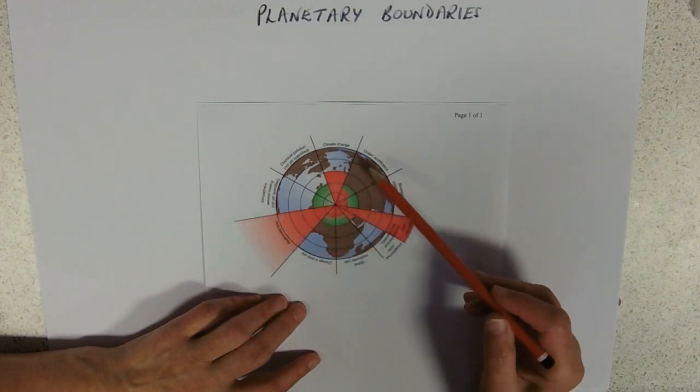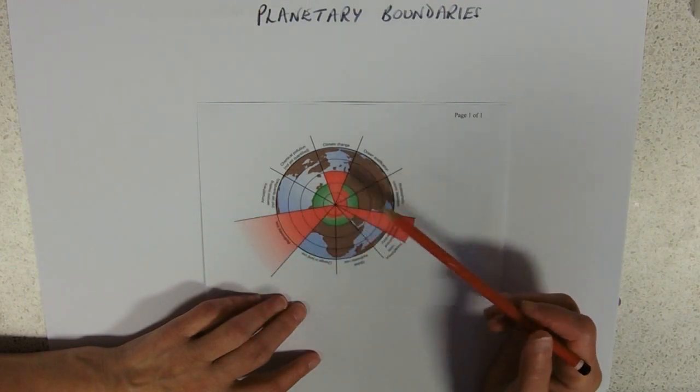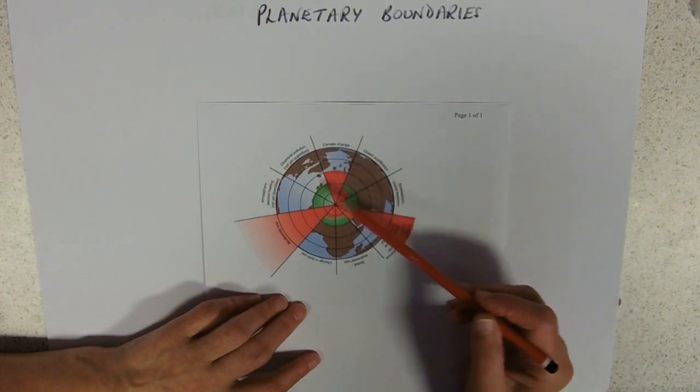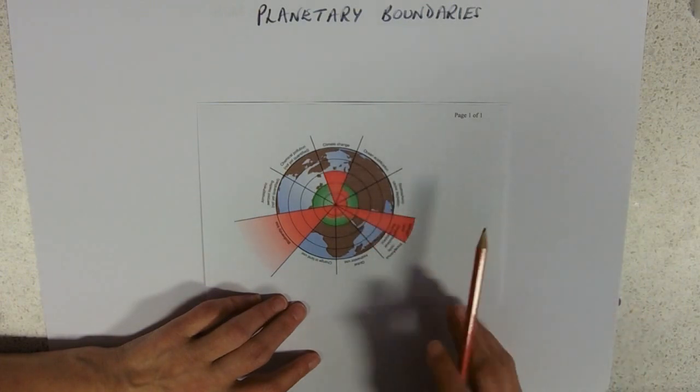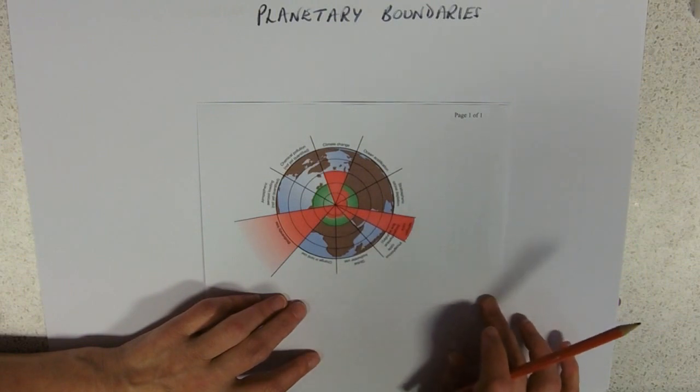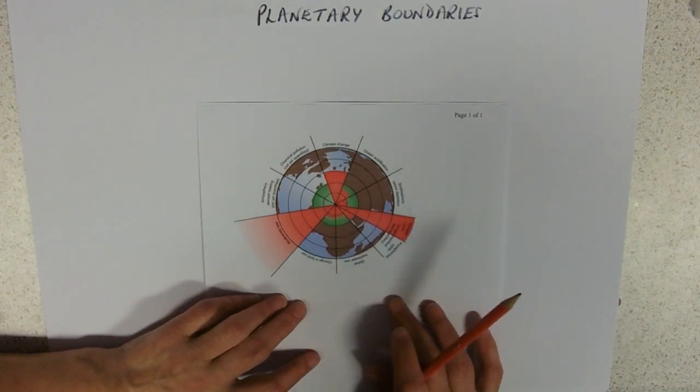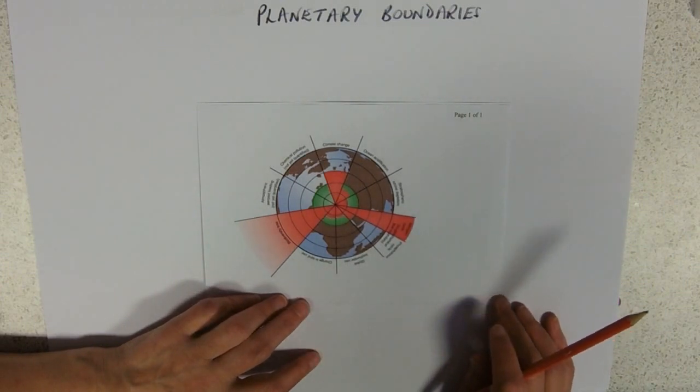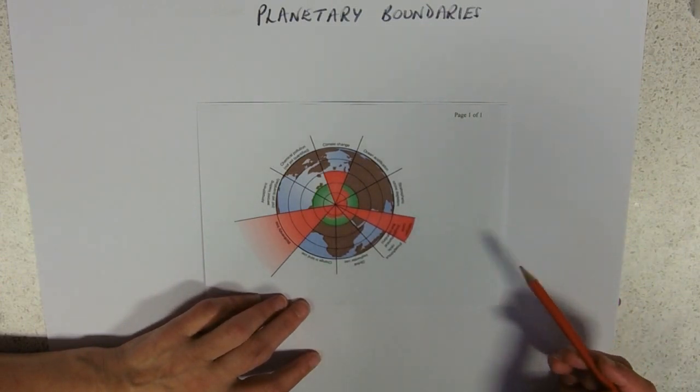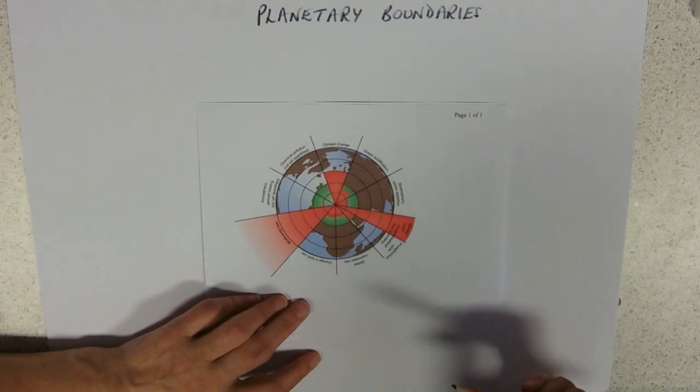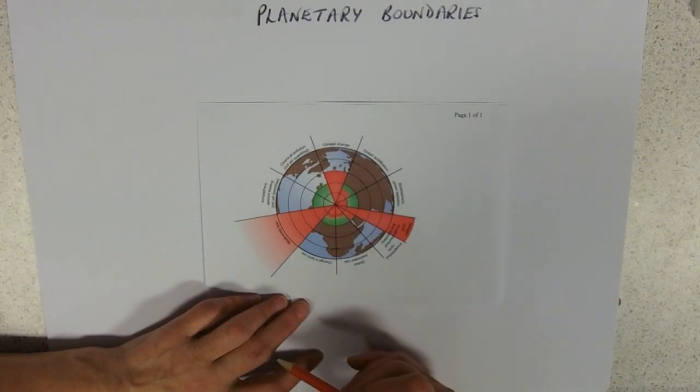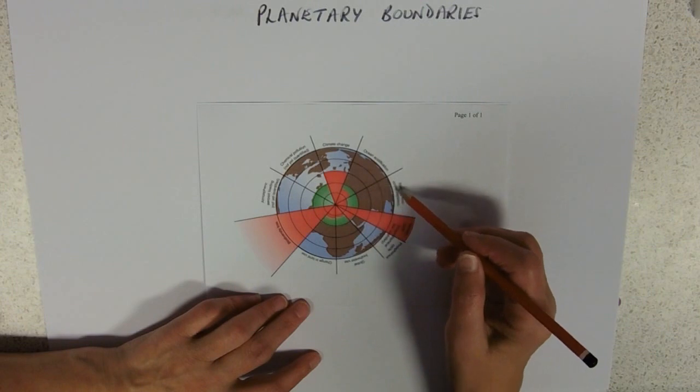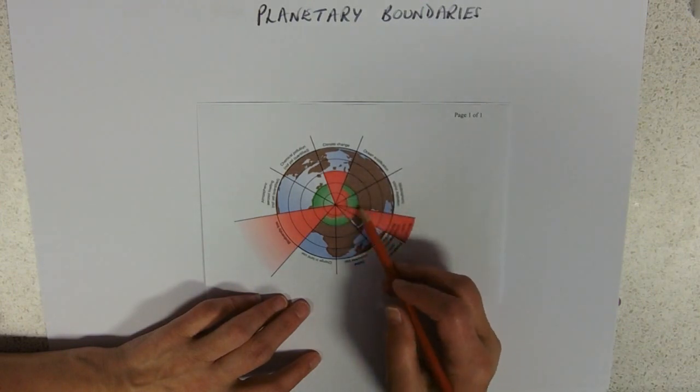The ocean acidification is avoidable. But again, that relates into fossil fuel use and fish farming. The ozone boundary has been avoided. Use of CFCs has been banned and that hole in the ozone layer is now closing up. So that's stratospheric ozone depletion. And we've kind of clawed that one back a bit.